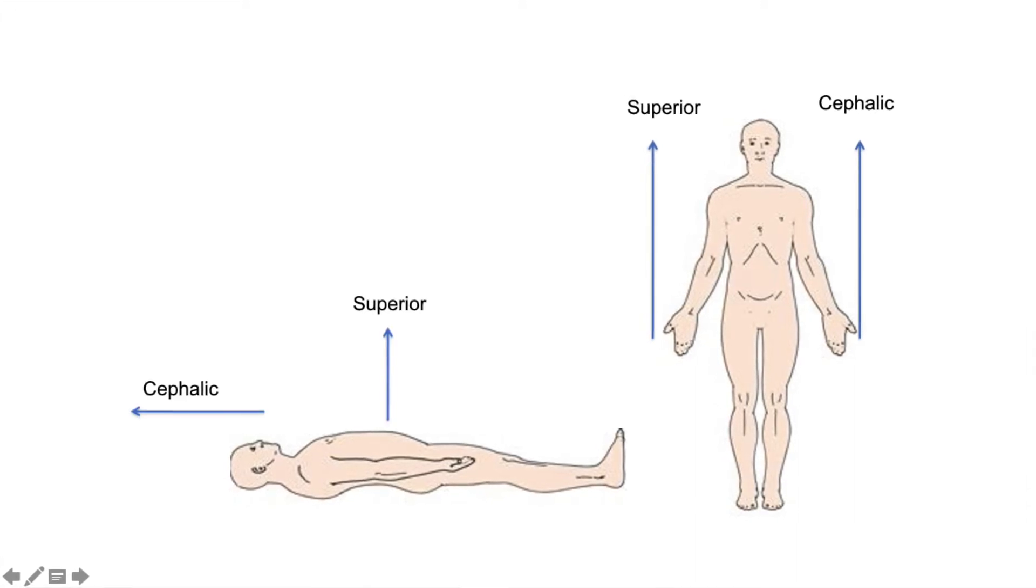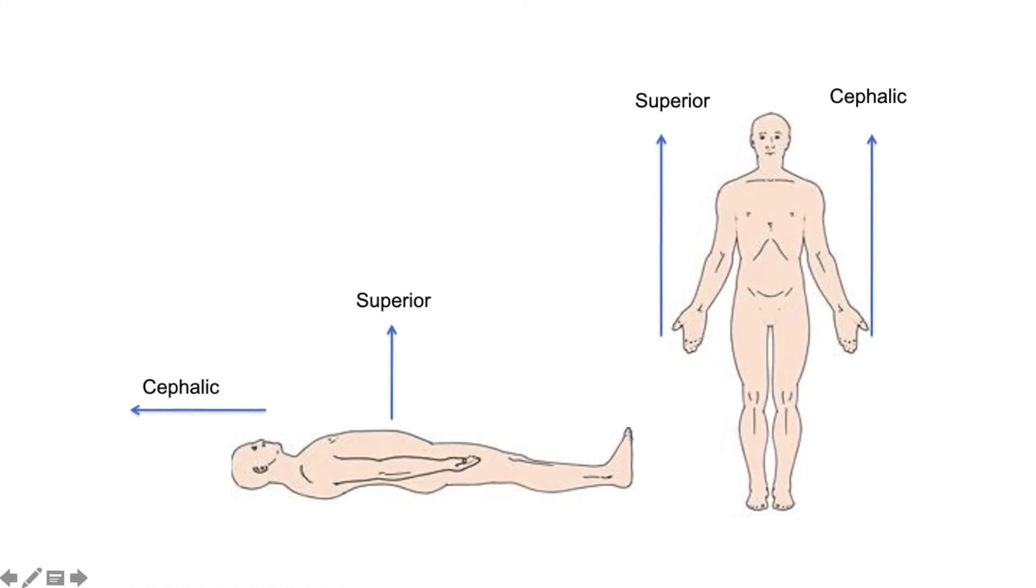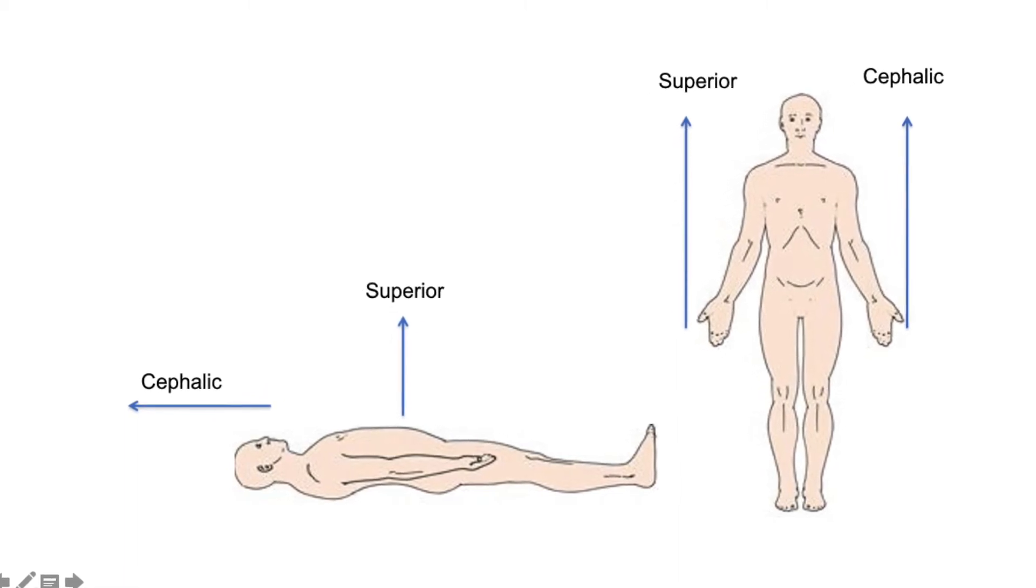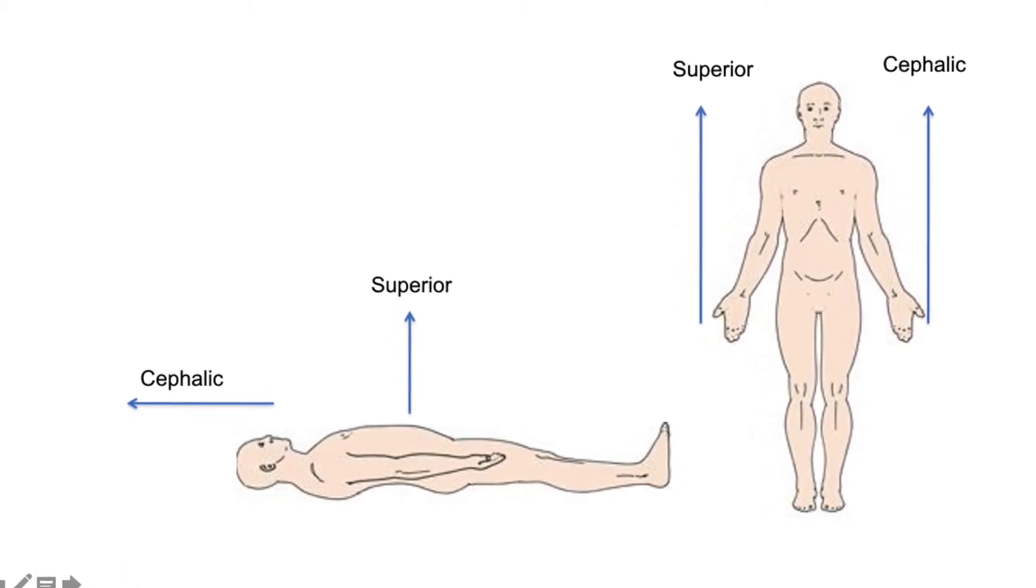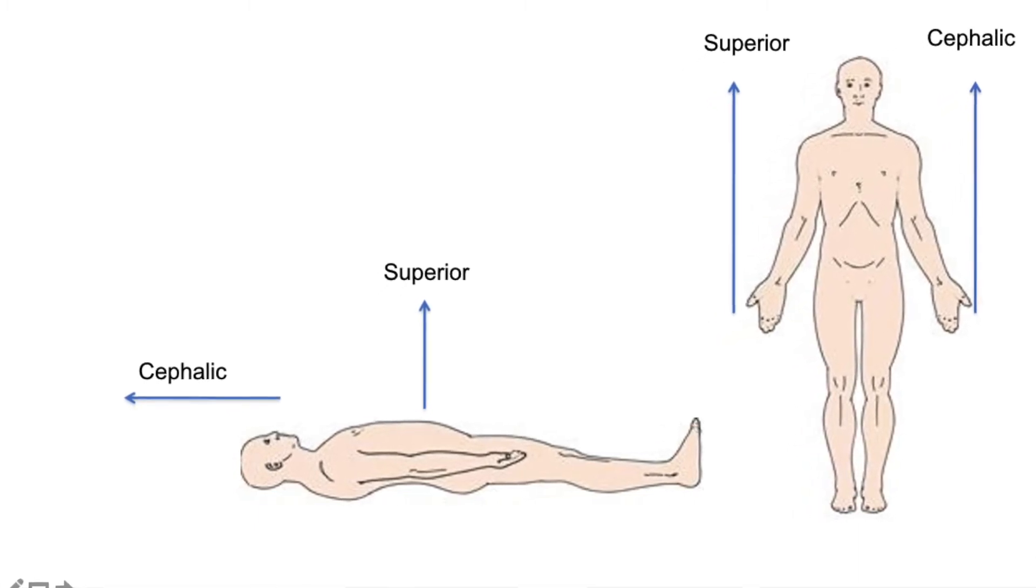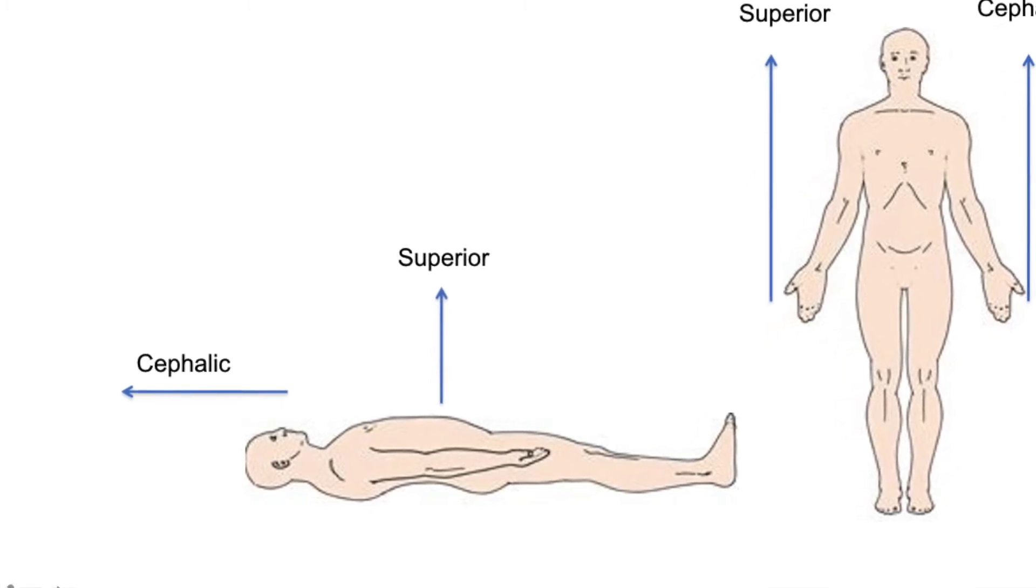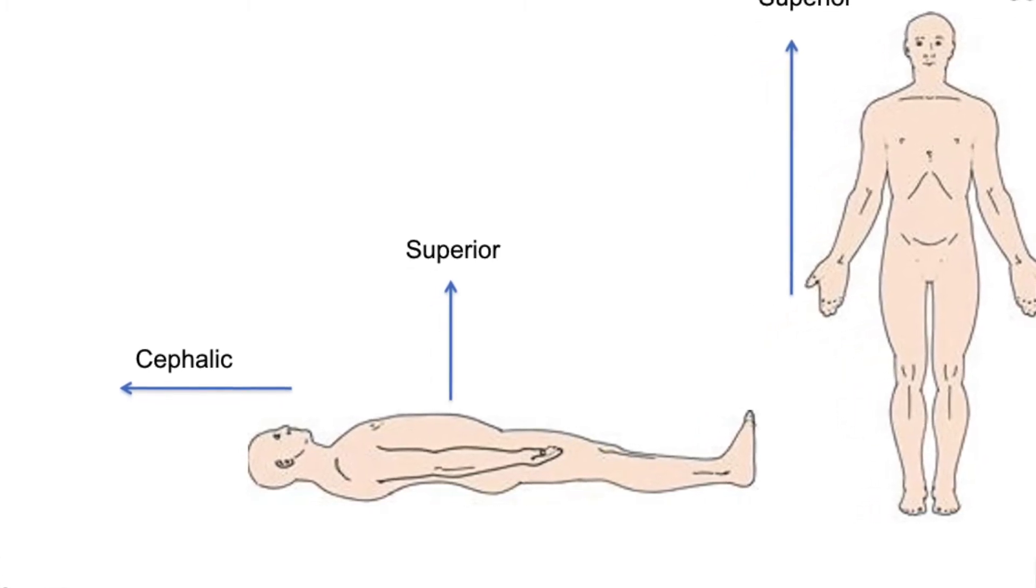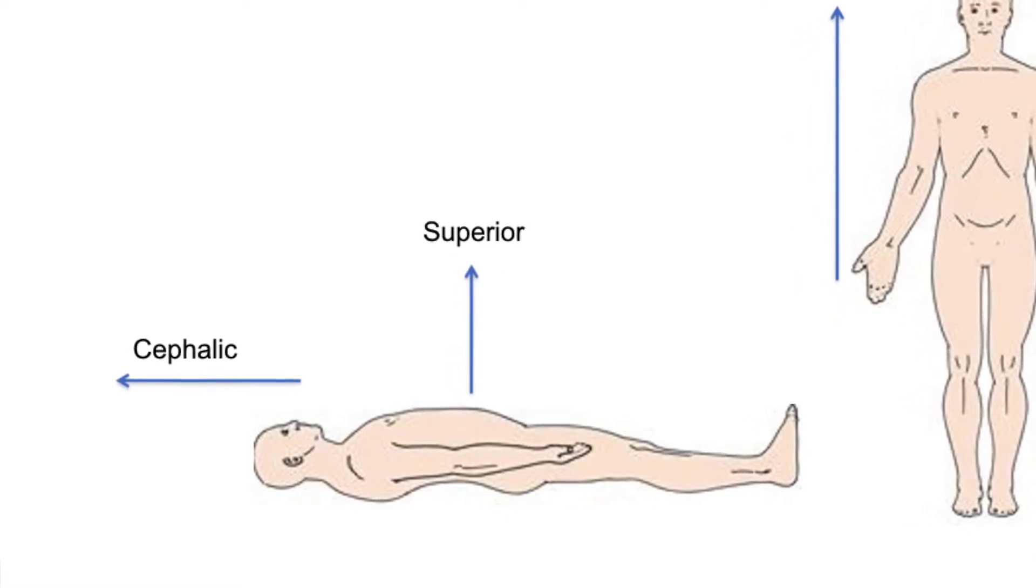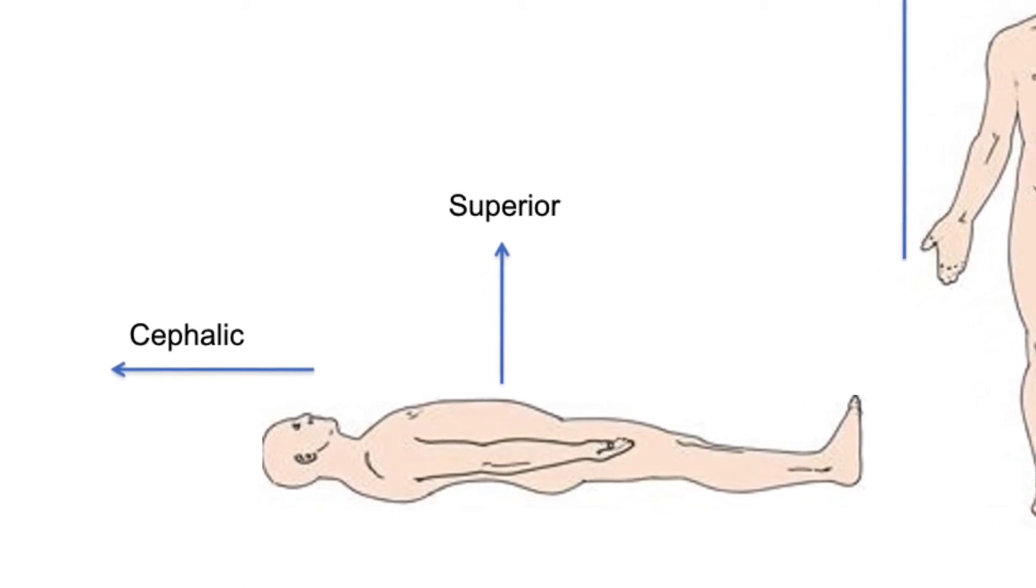Your shoulders, if you're lying down on your back, are still cephalic to your belly button, meaning they're still closer to your head than your belly button is. So no matter how your body moves, cephalic stays the same, superior is always going to be up. So now if you are lying on your back, your chest muscles are superior to your lungs. They're above your lungs.